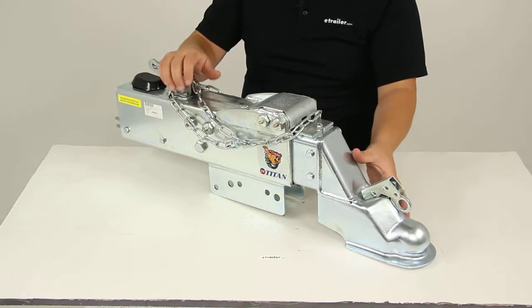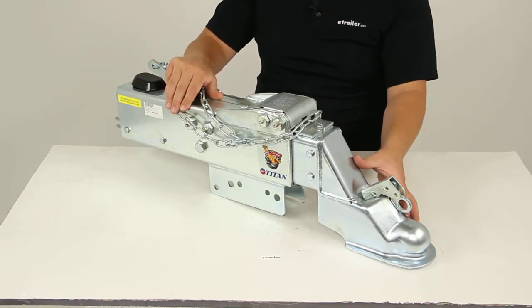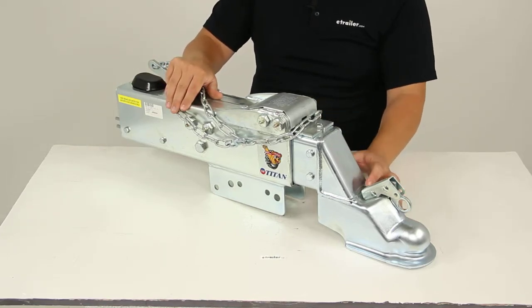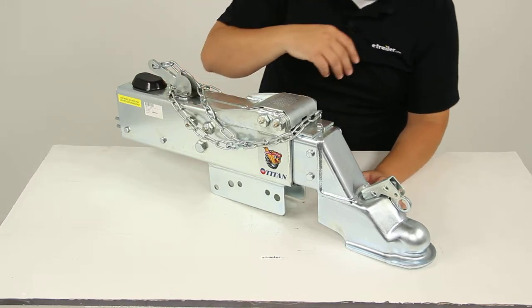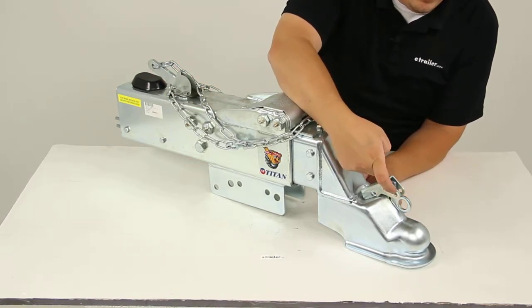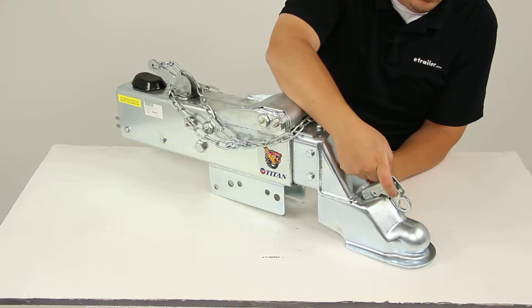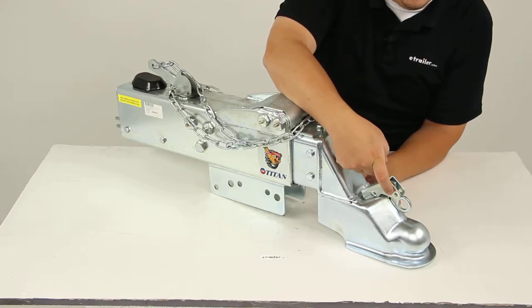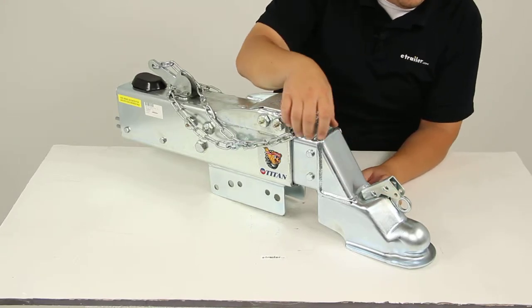Up here at the front, we have a standard heavy-duty ball coupler with a built-in drop. Again, that's going to be a three-inch built-in drop. Has an easy-to-use latch system. It also has the cutout hole. That way you can install a coupler pin or a coupler lock. Those are available and sold separately at eTrailer.com.